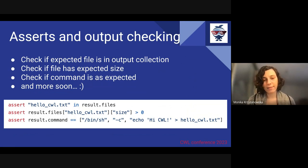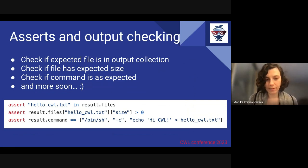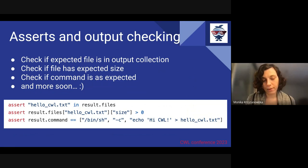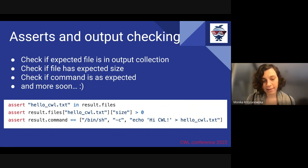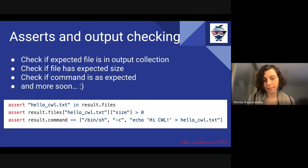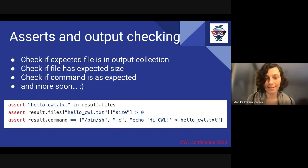Our library has functions that allow you to make assertions and check outputs. For example, you can check if a file you expect is in the output collection and also verify if the size is as expected. We also implemented functionality to check if the command created by CWL is exactly the same as you expect, as this is a common source of errors in practice. We also plan to implement more functionalities soon.